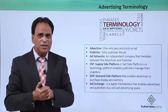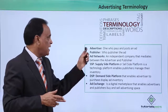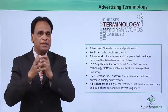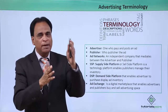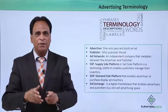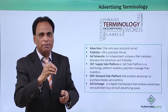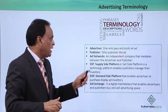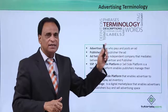Now, what are the terminologies associated with mobile advertising? The advertiser is the one who pays and posts the ad, promoting their business, products, services, and solutions. The publisher is the one who publishes the ad — basically the owner of the mobile apps or mobile website — and they publish the ads posted by the advertiser.